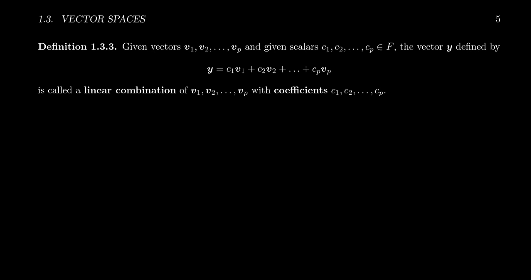And then define some new vector y as the following expression. y is equal to c1 v1. So we take the scalar product there. We add that to, and this would be a vector sum here. We add that to c2 v2, add that to c3 v3, all the way down to cp vp.